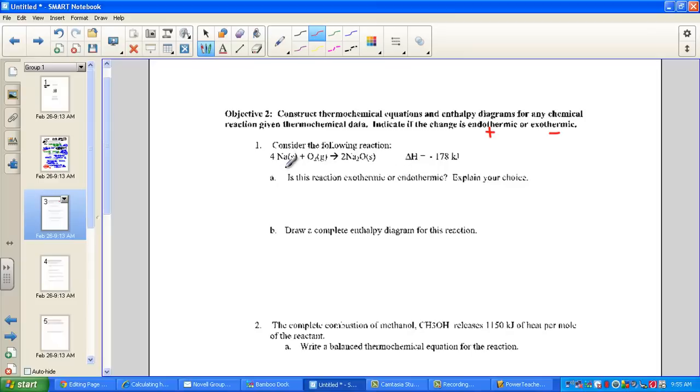If we consider 4 sodiums combining with oxygen to produce Na2O, this is a combination reaction. We note that the reaction itself is negative 178 kilojoules of heat. Delta H equals negative 178. Right away we're noting that because of this negative sign, heat is being released, it is indeed exothermic.